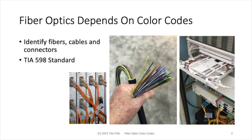Fiber optics depends on color codes. We use them to identify fibers, cables, and connectors, and other components that we use in building cabling systems. The only standard that really covers color codes specifically is a U.S. standard, TIA-598, which is basically what we'll be referring to in this lecture.